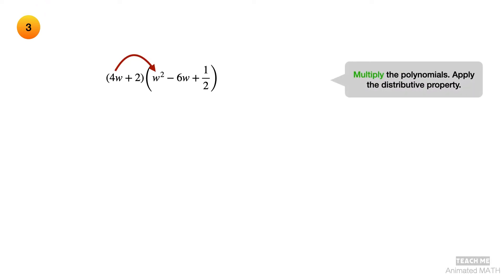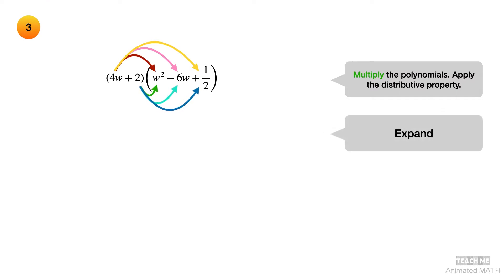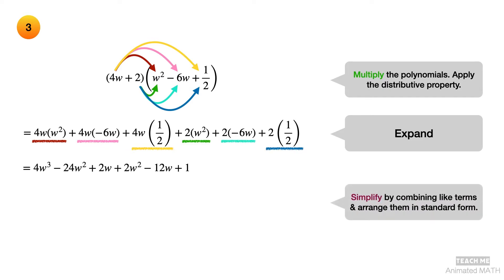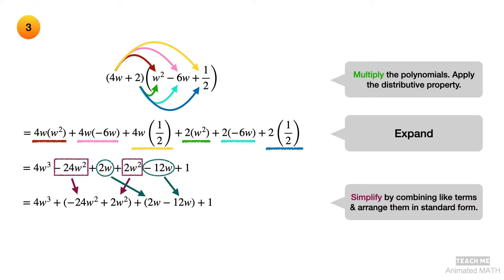Apply the distributive property when you multiply the polynomials. Expand the product — each colored arrow is matched with an underline of the same color. Simplify the polynomial product by combining like terms and arrange in standard form. The final answer is 4w cubed minus 22w squared minus 10w plus 1.